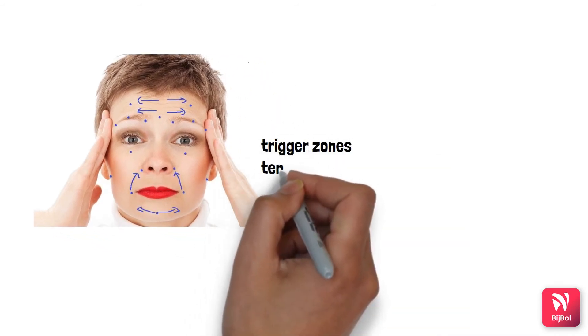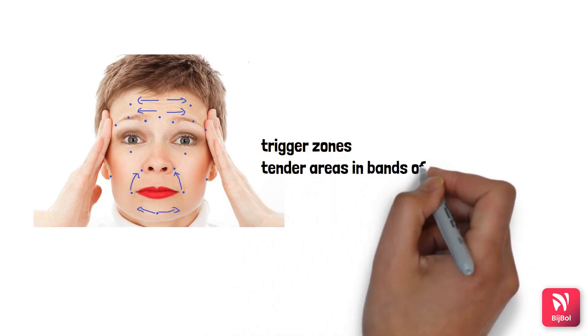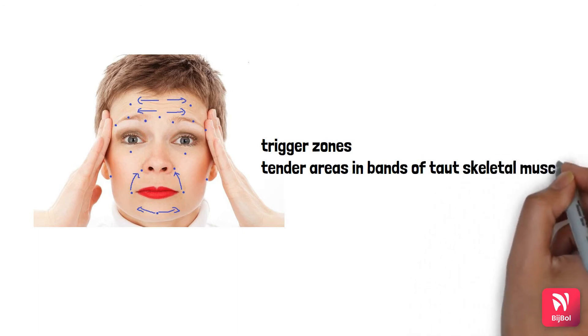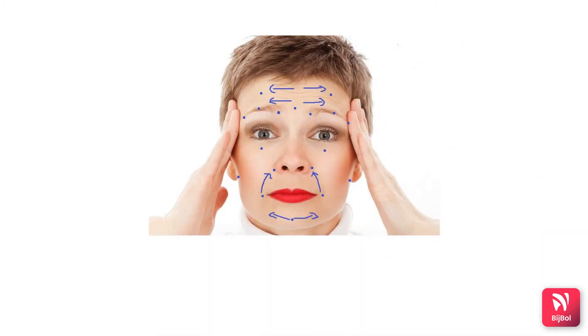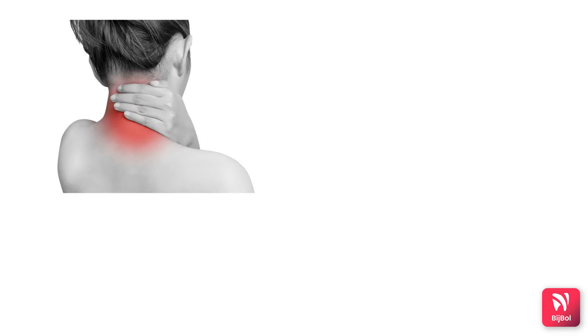within the bands of skeletal or masticatory muscles in the head and neck region. Whenever these trigger zones are palpated or stimulated, the pain gets referred to another muscle in a distant area or the cervical muscles. This point is called a zone of reference.